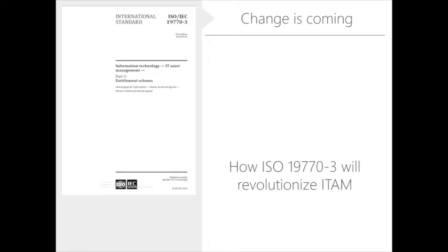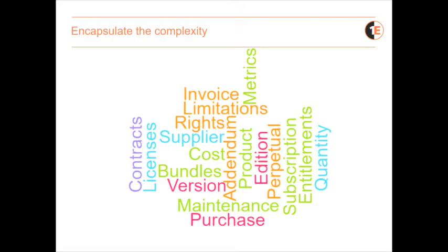For those new to the standard: dash-1 is the best practices, dash-2 is the tags for when software is installed. Dash-3 is an encapsulation of what you're buying when you make a transaction on software — either an external transaction buying from a vendor, or even an internal transaction allocating software to a different business unit. It captures your entitlements: what you're buying, the product, edition, quantity, whether it's a bundle, any limitation on use, your rights, what contract it relates to, whether there's maintenance, and whether it's perpetual or subscription.